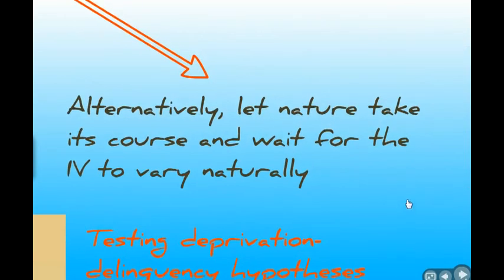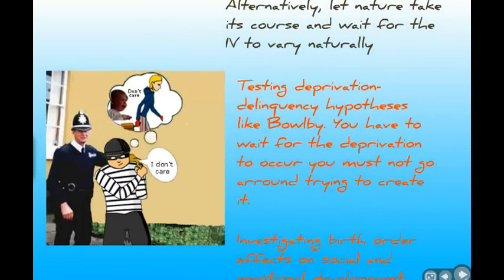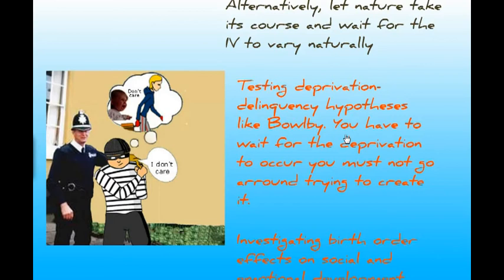There are circumstances where we mustn't or can't manipulate the IV. For a Bowlby-type deprivation-delinquency hypothesis, you clearly can't manipulate half your participants to experience maternal deprivation and the other half not, and then track their lives to see who winds up in delinquency. It would be unethical and totally impractical.